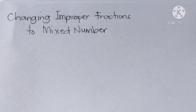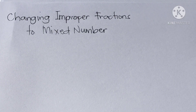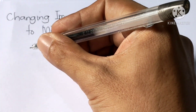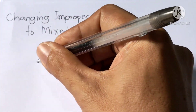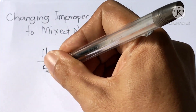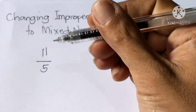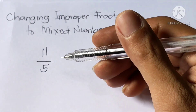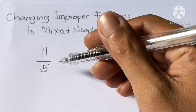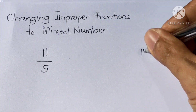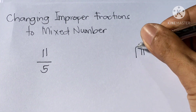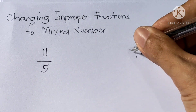Now let us try to answer some examples — changing improper fractions to mixed numbers. Example number 1: 11 over 5. First step, divide the numerator by the denominator. So, 11 divided by 5.